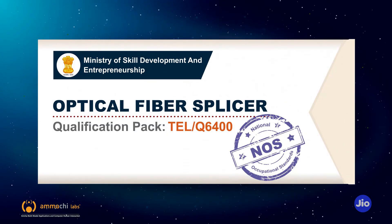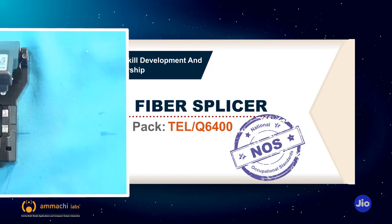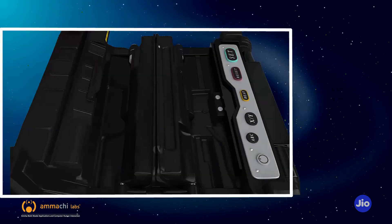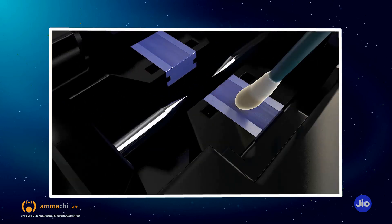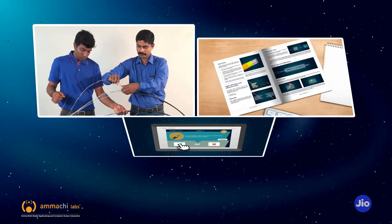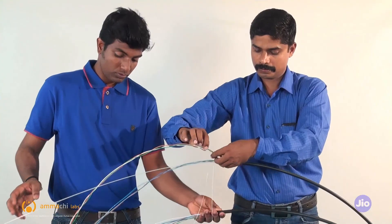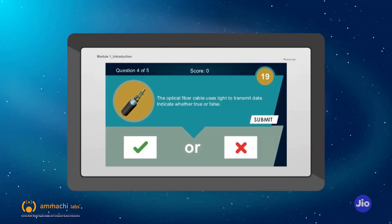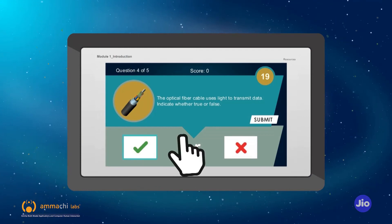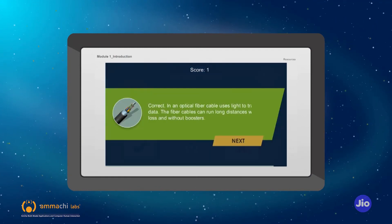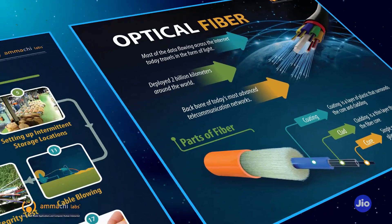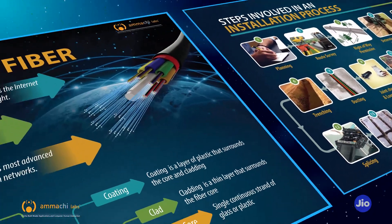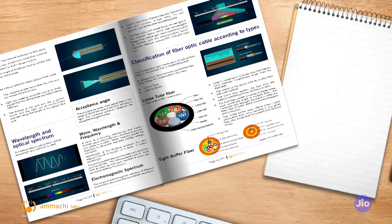The Optical Fibre Splicer e-learning course is rich with multimedia-based videos, 2D and 3D visualizations and interactive games. The package includes step-by-step demonstrations by industry experts, interactive games and feedback to train and assess the competencies of participants, infographic posters of key processes and safety, and a detailed student handbook and study guide.